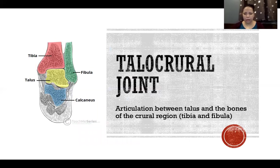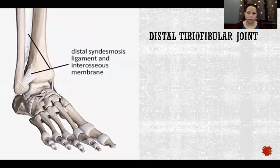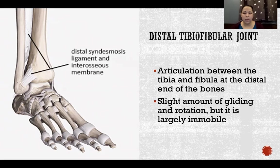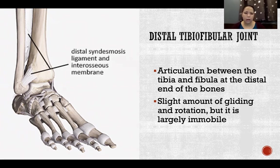The talocrural joint is the articulation between the talus and the bones of the crural region — hence its name. The crural region is the region between the knee and the ankle, so the bones of the crural region are the tibia and fibula. The distal tibiofibular joint is the articulation between the tibia and fibula at the distal end of the bones. The tibia and fibula are joined together by an interosseous membrane, just like we have at the radius and ulna, which allows a slight amount of gliding and rotation to accommodate movement at the ankle and at the knee.